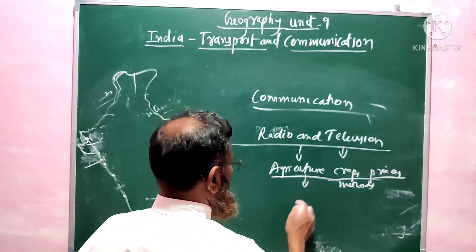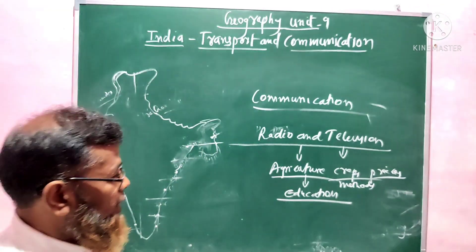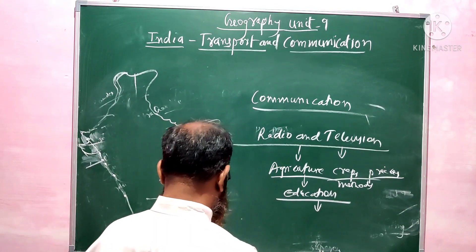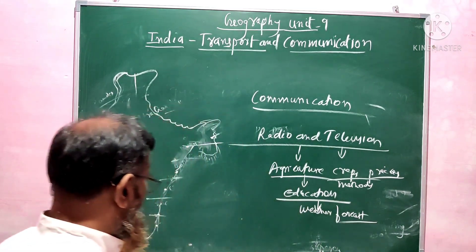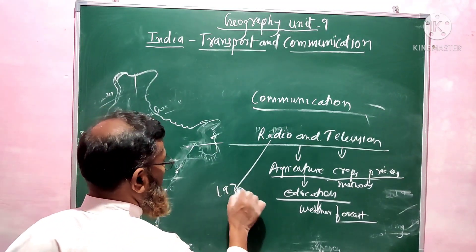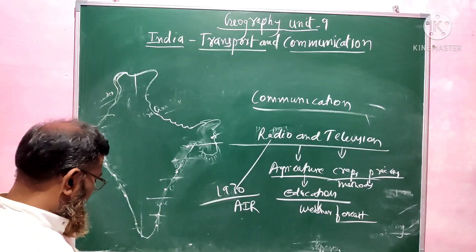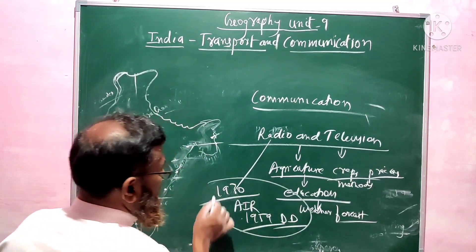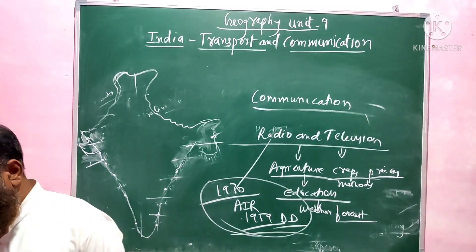Farmers also get information about methods of agriculture through television. Television also provides educational programs to students, especially during the pandemic. Weather forecast information is also given through television. All India Radio was started in 1913 in India. Television services were started in India during 1959 in the name of Doordarshan (DD). These are playing a very important role in the communication system of the country.